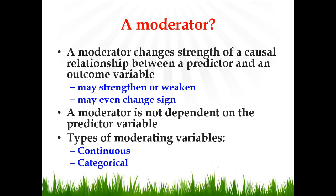A moderating variable is a variable which strengthens or weakens the causal relationship between two variables. A moderating variable could be continuous, just like age or income, or it could be categorical, just like gender. In this session, I'll use a continuous variable as a moderator.